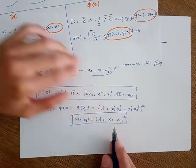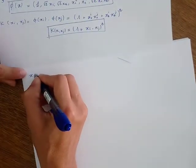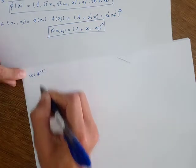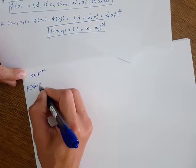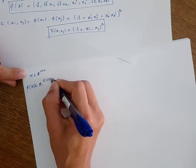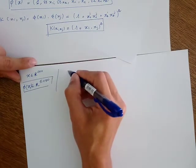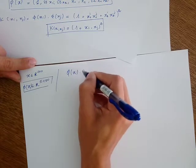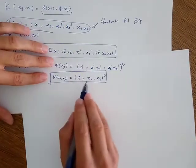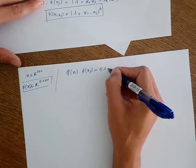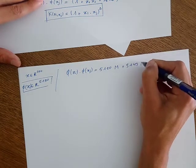To examine that, consider again that in the original feature space the number of dimensions is 100. In the mapped feature space, the number of dimensions is almost 5,150. Without the kernel function, computing the dot product in the mapped space would take 5,150 multiplications plus 5,149 additions.